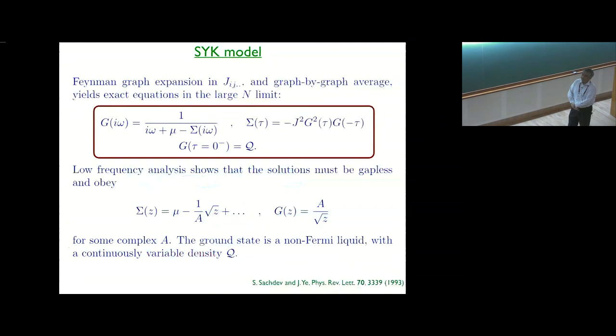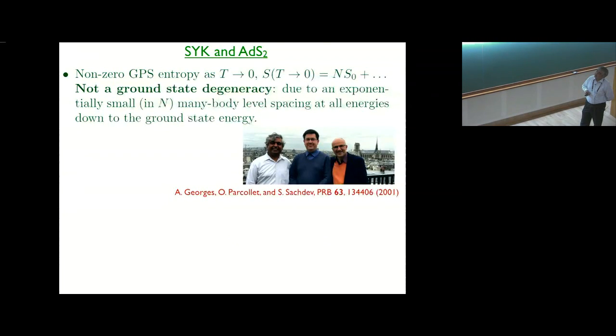As David mentioned, you can solve the large-n limit, and it's basically the same apart from a few details. There's this one over square root of frequency divergence of the Green's function. This was what we already understood in the very first paper on this class of models. Then later in discussions with Antoine Georges and Olivier Parcollet, we noticed it had a property which initially seemed rather alarming to us, that if you computed its entropy as temperature went to zero, this went to a non-zero constant proportional to N. There was a lot of beautiful mathematics to actually compute the value of S zero, which we did succeed in computing. But this is a violation of the third law of thermodynamics.